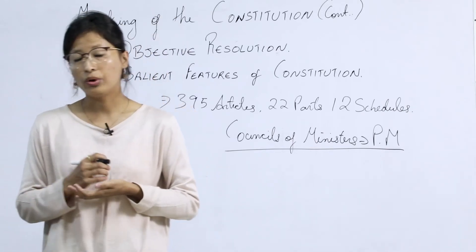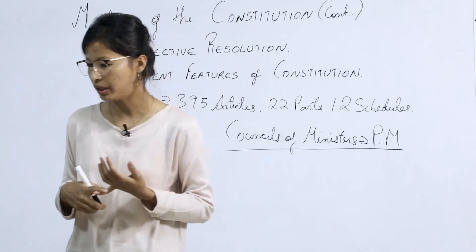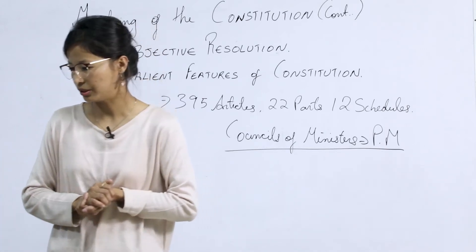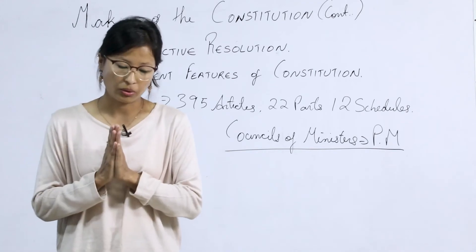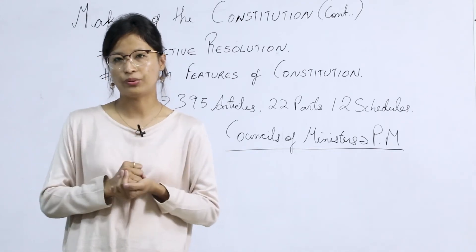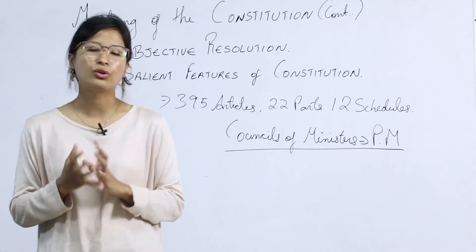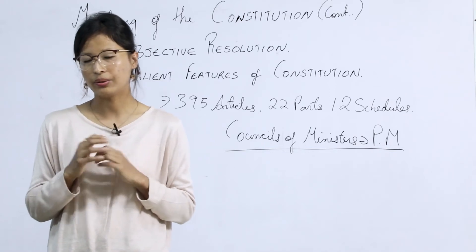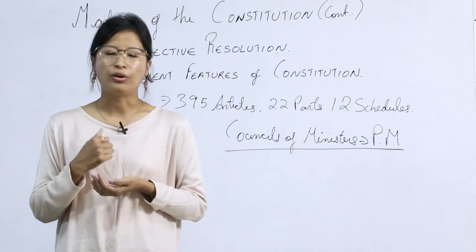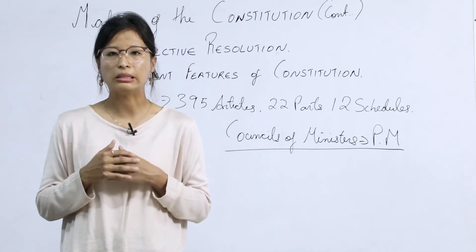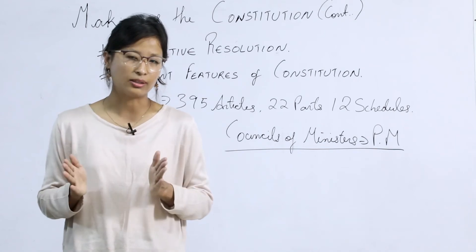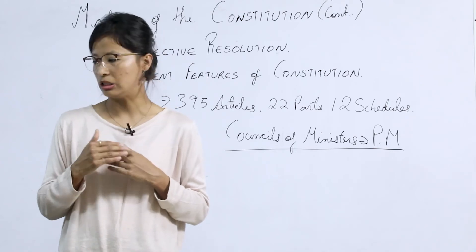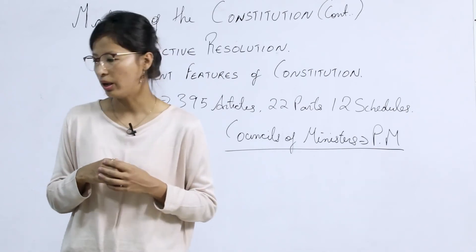Point number five: centralized federation. A unitary state is one in which all powers are vested in the center — a single authority. A federal form of government distributes power between the center and the states. Our constitution has a blend of both centralized and federal features.